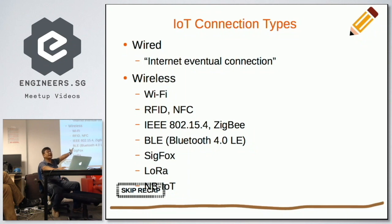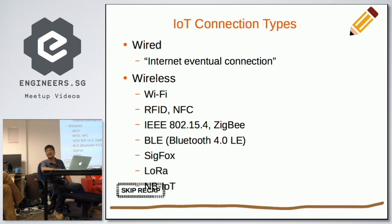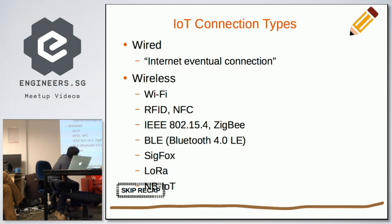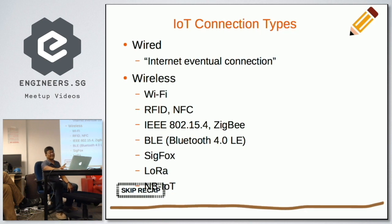The types of IoT connection types — I've been cautioned not to say wired, but even wired devices are considered IoT devices. They're still connected to the internet, and you want your device to eventually connect to the internet in some manner. The wireless ones include Wi-Fi, RFID, NFC, IEEE 802.15.4 (ZigBee is part of it), Bluetooth Low Energy from version 4 onwards, 6LoWPAN, LoRa, and finally NB-IoT, which is the one I'm experimenting with right now — and I'm struggling with it.